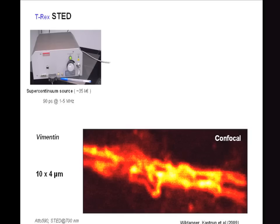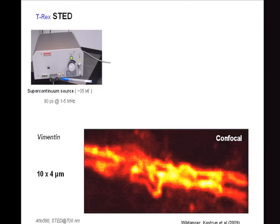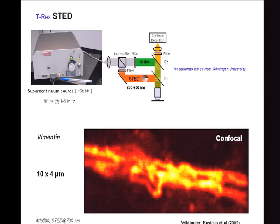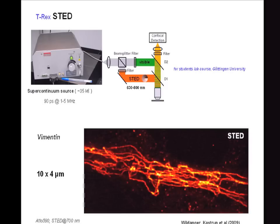Laser development has been quite dramatic in the last years. One possible option for using compact laser systems for STED is to use a supercontinuum source, which has the advantage of providing the right wavelengths for both excitation and stimulated emission from the visible spectrum. This has allowed us to set up a relatively simple system that can be used very easily by anyone, because the light used is inherently synchronized. We set this up for a lab course — this is the type of picture a student can get using this type of microscope.